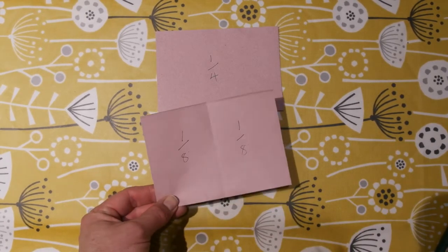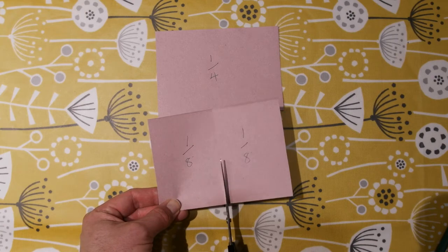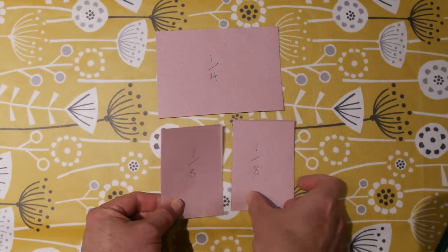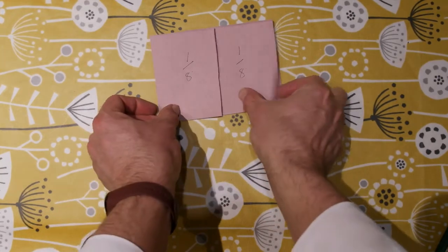And again, we can cut those out. And now we can see that two eighths combine together to make a quarter.